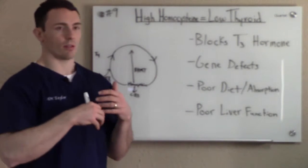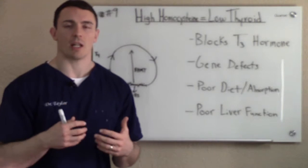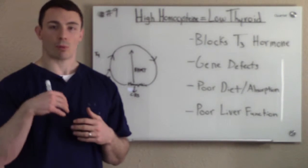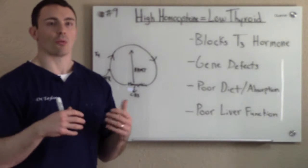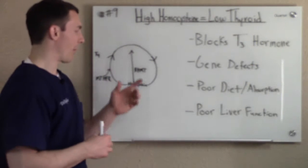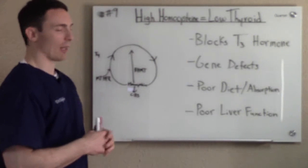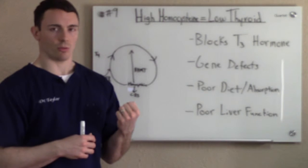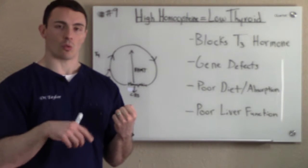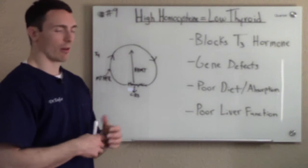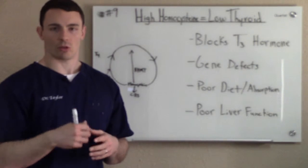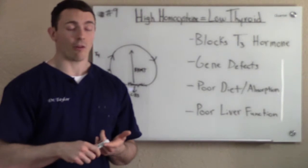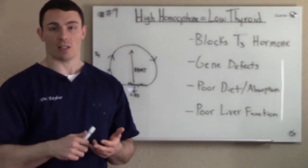What's nice about identifying these things is that's why we do genetic variance reports in our office. As we see these issues, we can properly support you to correct them — properly supporting the BHMT or the CBS down-regulation so they start pulling homocysteine like they're supposed to, and everything starts to work correctly. Same thing with MTHFR — we can support that so it starts to work like it's supposed to. Very important things as far as not only thyroid, but other chronic issues as well.